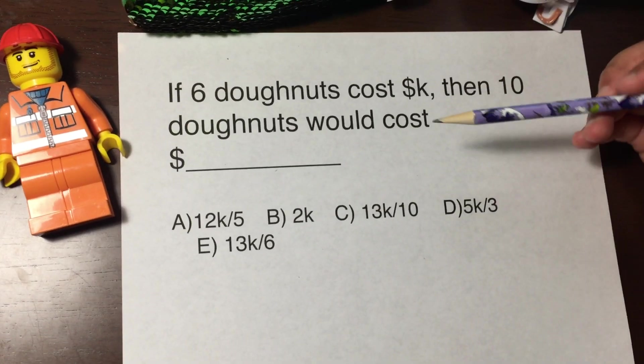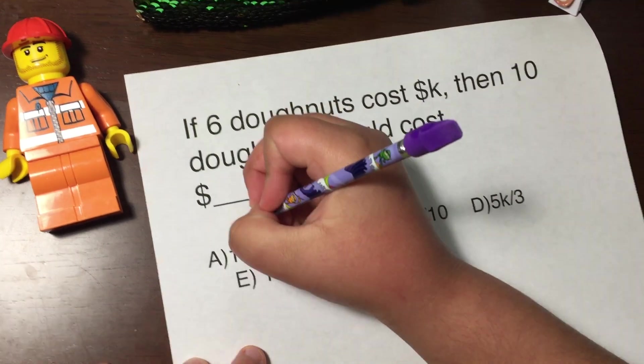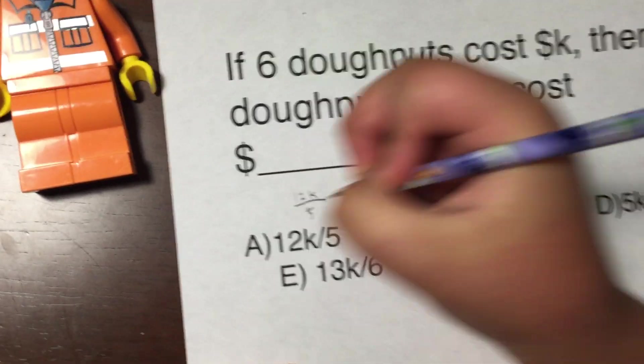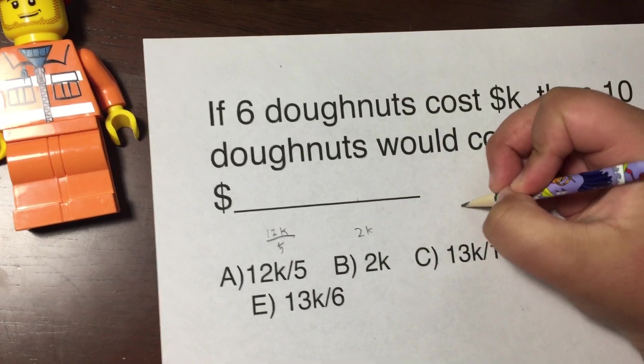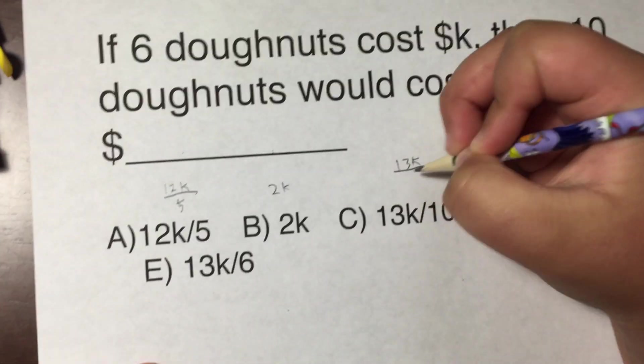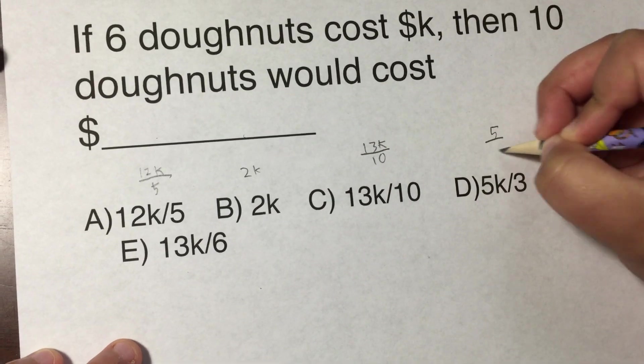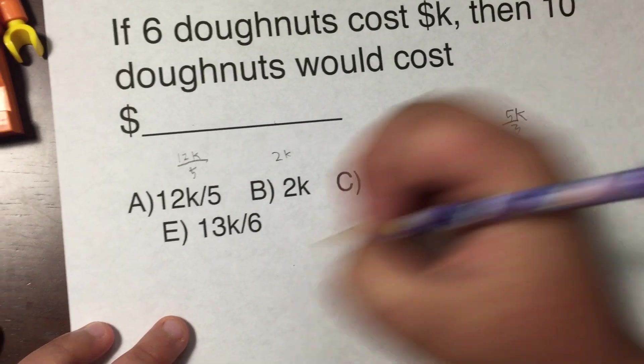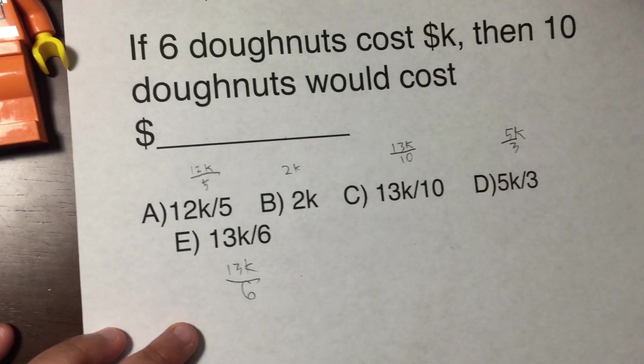We have our choices. I'll just write it out because I wasn't able to type it properly on the computer. So there's 12k/5, then there's 2k, and then there's 13k over 10, and then there's 5k over 3, and then there's 13k over 6.